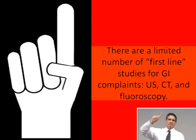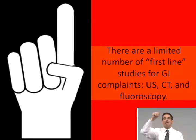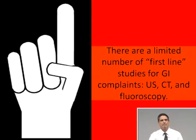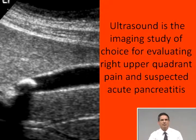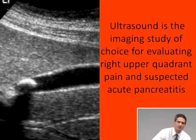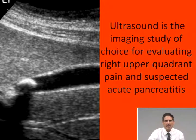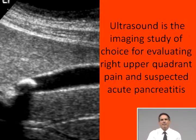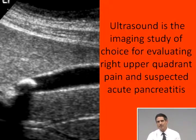So that's point number one: there are a limited number of first-line studies for gastrointestinal complaints — ultrasound, CT, and fluoroscopy. Point number two: ultrasound is the imaging study of choice for right upper quadrant pain and suspected acute pancreatitis.